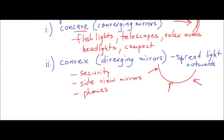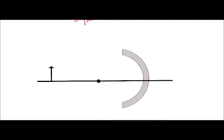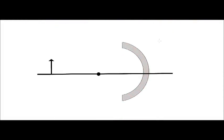Curved mirrors also follow the law of reflection. Here we have a concave mirror. When drawing these light diagrams, there are a couple of things to note. First, we're going to have our object, and we typically use an arrow to represent the object.